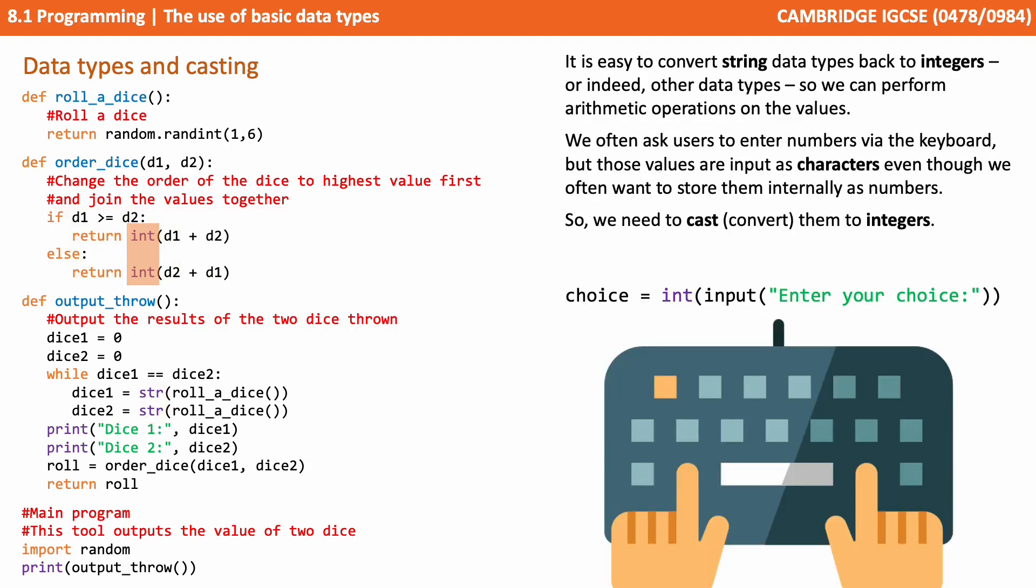It is easy to convert string data types back to integers or indeed other data types, so we can perform arithmetic operations on their values. We often ask users to enter numbers via the keyboard, but those values are input as characters or strings, even though we often want to store them internally and then manipulate them as numbers. So we do what's called data casting, which converts one data type to another. This is strictly beyond the IGCSE syllabus. You don't need to understand about data type casting, but it's such a common function you perform in programming and supported by all languages that we thought we'd mention it here anyway.